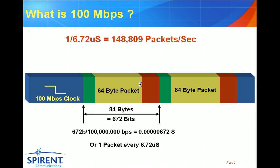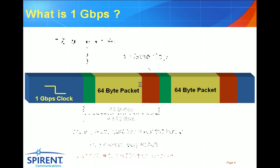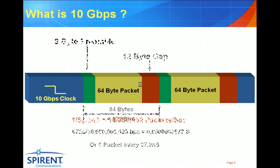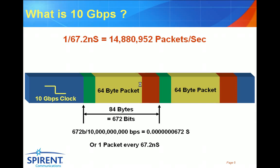If we now step the speed up to 100 Meg, we're now transmitting 148,809 packets per second, or one packet every 6.72 microseconds. At one gig, we're really flying — now moving at 1,488,095 packets per second, or one packet every 67.2 nanoseconds. At 10 gig, we now move 14,880,952 packets per second, or one packet every 67.2 nanoseconds. Because it's IP, everything stays the same in terms of packet structure.